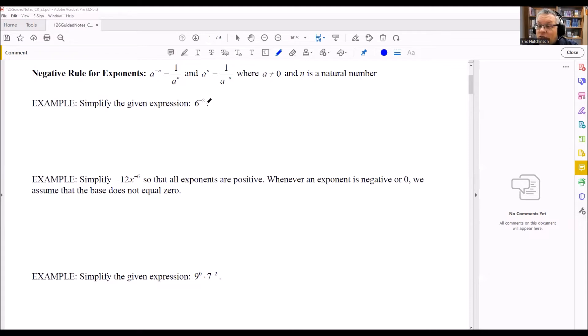The first one is simplify the given expression: 6 to the negative 2. We're going to use our rule. 6 to the negative 2 equals, following the formula, 1 over 6 to the 2. Now it's written as a positive exponent. That's how this property works. We can finish this off by getting 1 over 36. That's how we would evaluate that one.